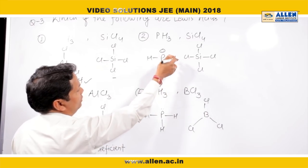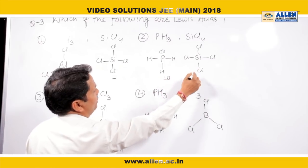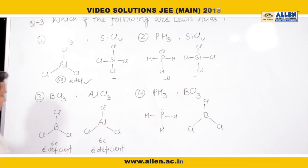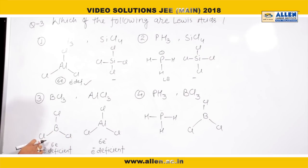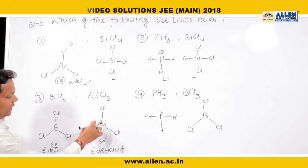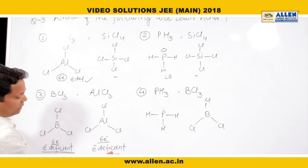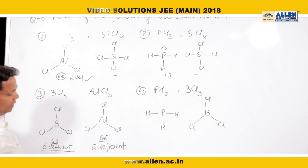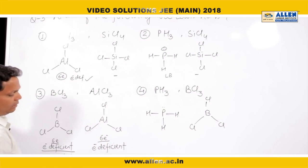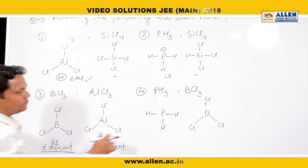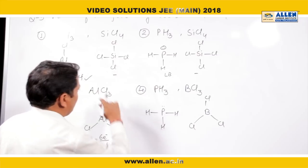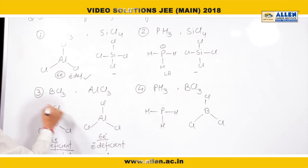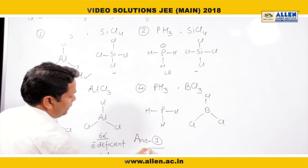Where the octet is complete and no vacant orbital is present but a lone pair exists, the species tends to provide the lone pair — that is why it is a Lewis base. In boron trichloride, boron has three electrons in its outermost shell; after forming three bonds with chlorine, it has six electrons and is electron deficient — a Lewis acid. Both boron compounds have vacant p orbitals and are electron deficient, so both behave as Lewis acids, while phosphine behaves as a Lewis base. The correct answer is the third option.